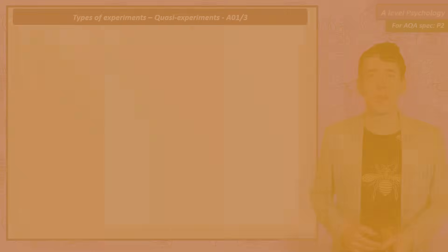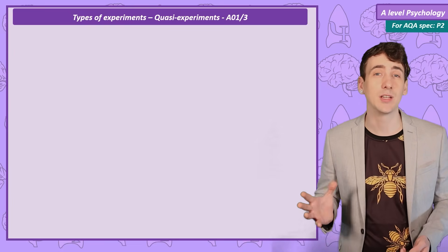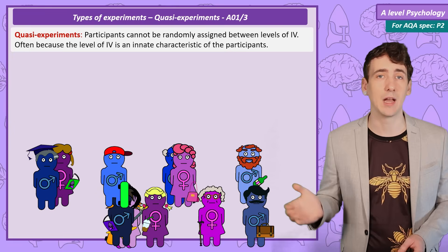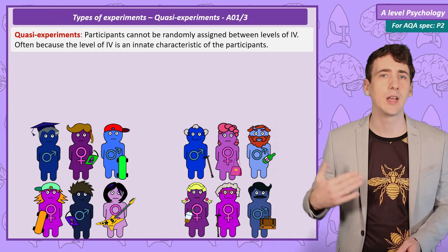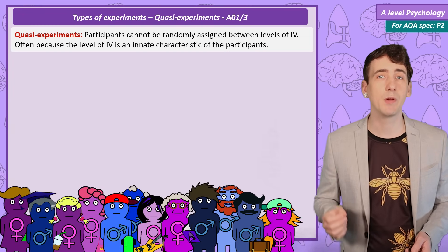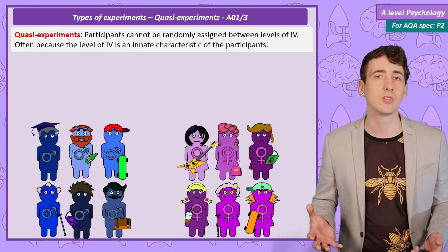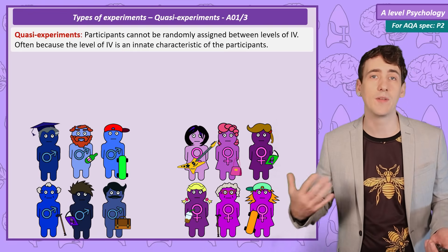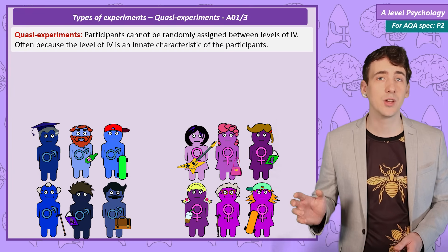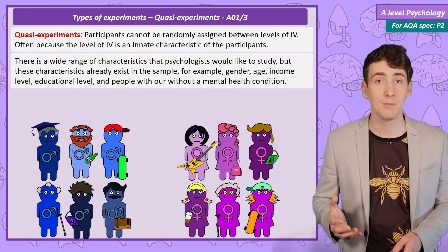The final type of experiment is known as a quasi-experiment. In a true experiment you should be able to randomly assign participants to the different levels of the independent variable — for example, blue light or green light on recall. But there are studies in which people can't be randomly assigned between conditions, for example when studying gender, age, or the difference between people with or without a mental health condition. These groups already exist, and if the researcher can't assign people to conditions or manipulate the levels of the IV, that is a quasi-experiment.